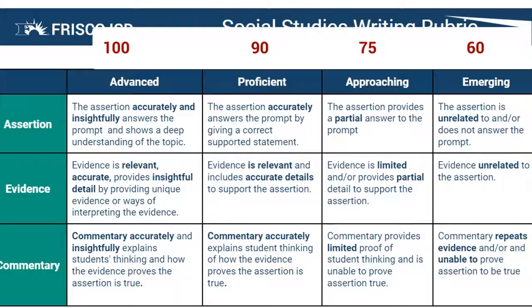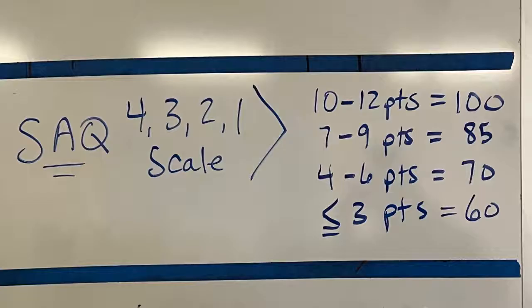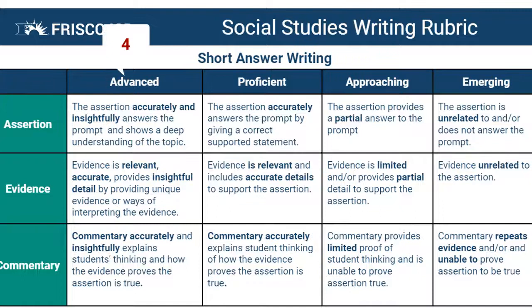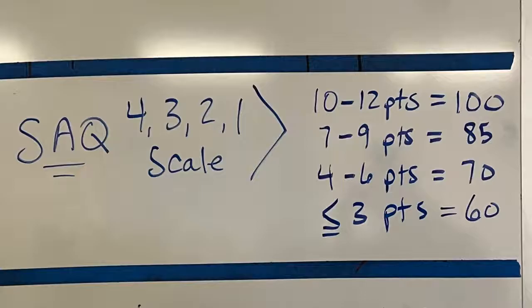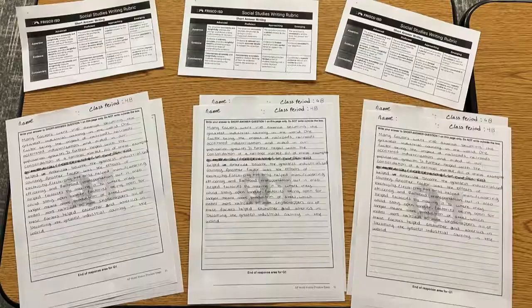Some members of our team wanted there to be a discrete grade for each of the four different skill levels, averaging in the assertion, evidence, and commentary. Other members of our team wanted there to be a 4-3-2-1 scale, and that within each range of points there would be a banded grade. For example, advanced would be a score of four, proficient three, approaching two, and emerging one. So if a student earned four points for assertion, three points for evidence, and two points for commentary, that totals nine, which would put them at the top range of an 85, showing proficiency.